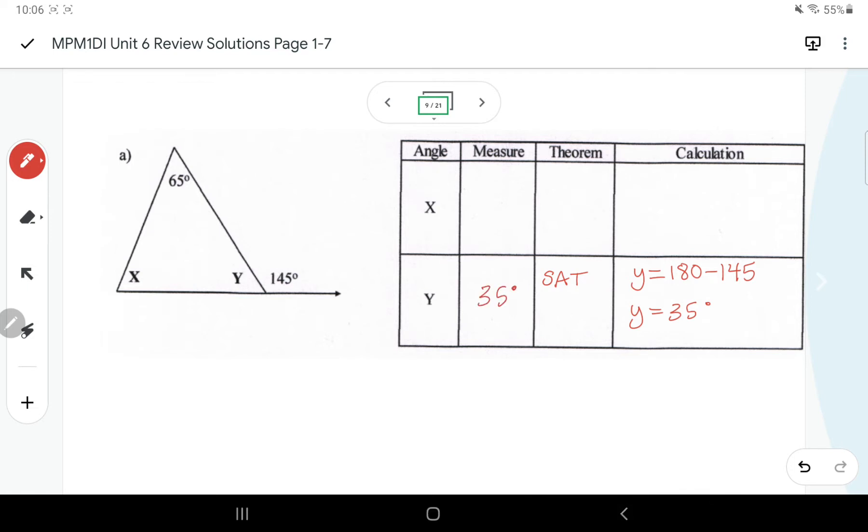And I think most people would then use the interior angles of a triangle theorem. Remember, that's the angle sum in a triangle theorem. So for X, if we know Y is 35, then we can say X is 180 minus 65 minus 35 because all three of those angles have to add up, and then we would get X is 80 degrees. So hopefully you guys got those angles.